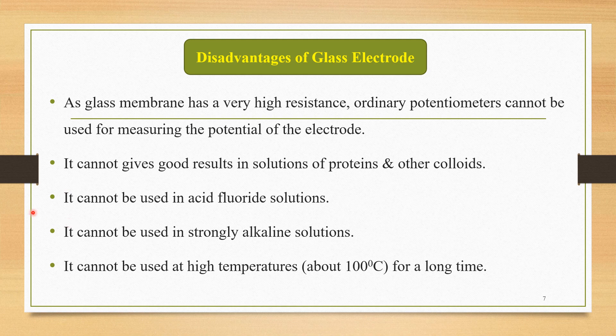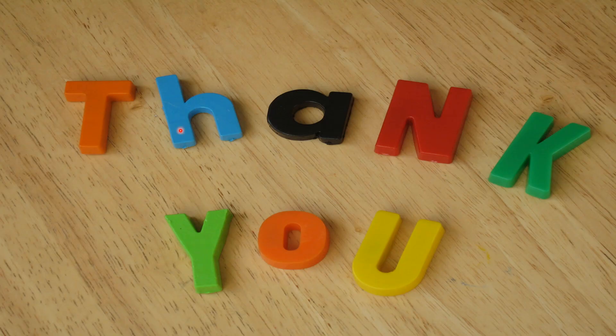In this lecture we focused on the important aspects of pH determination using the potentiometric method — the types of electrodes used, namely the glass electrode and calomel electrode, their typical forms, and the advantages and disadvantages of the glass electrode. The remaining points will be studied in the upcoming lecture. Thank you so much.